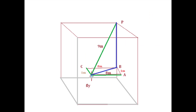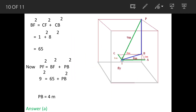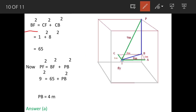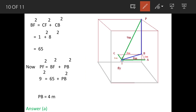We'll consider triangle BCF first. In this triangle, BF² is equal to CF² plus CB². CF is one meter and CB is eight meters, so BF² equals 1² plus 8², which gives BF² equals 65. We'll keep this as BF² and not simplify further.